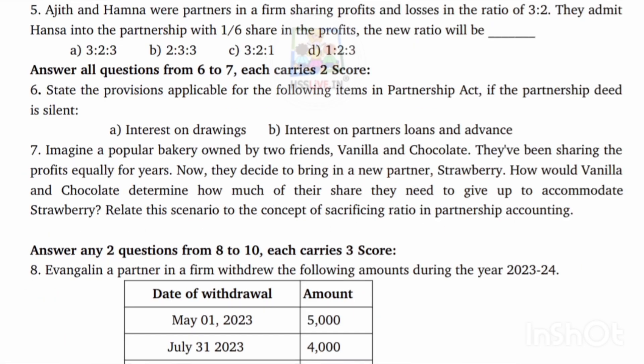Fifth question: Ajith and Hamna were partners in a firm sharing profits and losses in the ratio 3:2. They admit Hasna into the partnership firm with 1/6th share in the profit. Find the new ratio. Ajith and Hamna are partners with a 3:2 ratio, and Hasna gets 1/6 share.